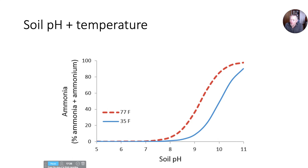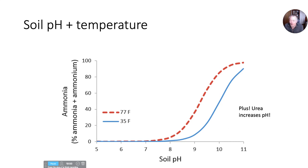Soil pH and temperature combined: here we have two different temperatures — 35 and 77 degrees — across the range of pHs in an experiment. The amount of ammonia generated increases drastically when you get above pH 8, which is where a lot of our agricultural soils are. But urea hydrolysis increases pH in the zone around that prill and can increase it drastically — even at low temperatures you can get to pH 9 or 10 temporarily around that prill, which is going to drive volatilization.